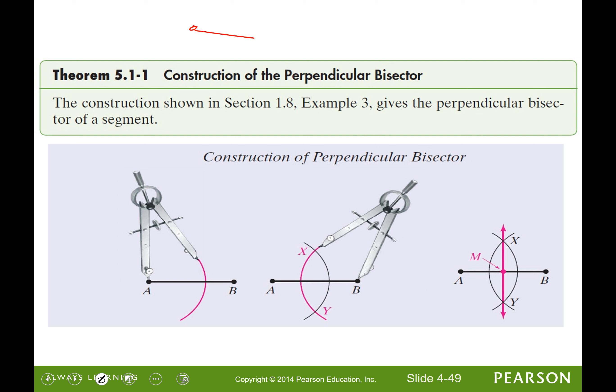That means you can take any segment and you can bisect it so cut it in half with a perpendicular line. Perpendicular bisector could be a ray or a segment as well.